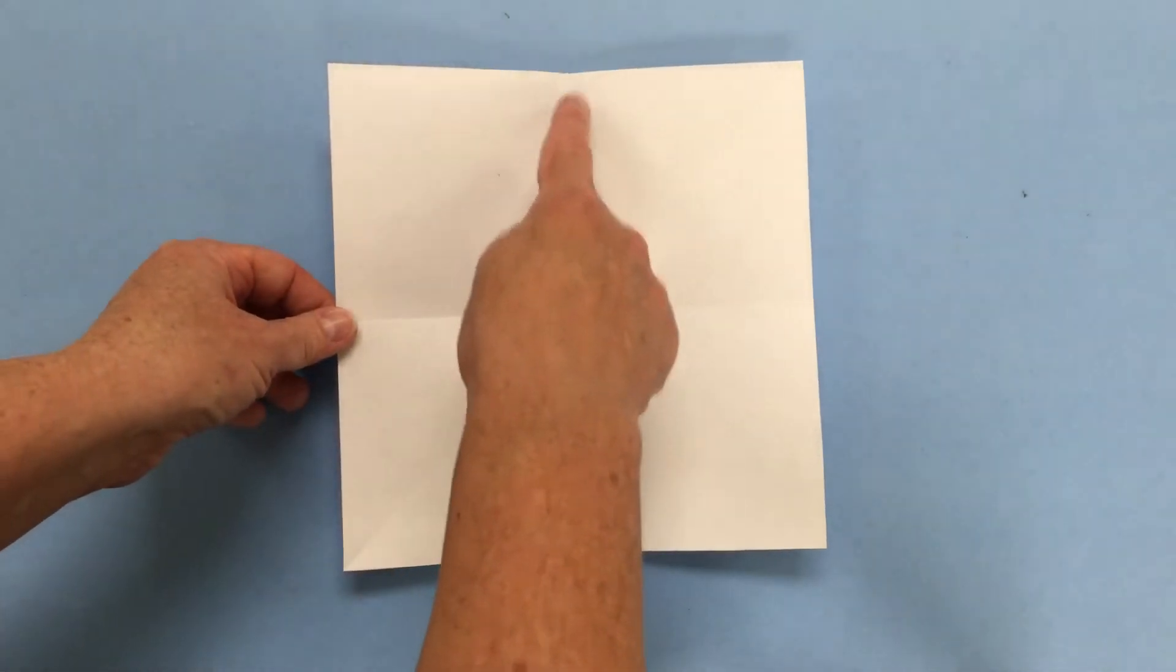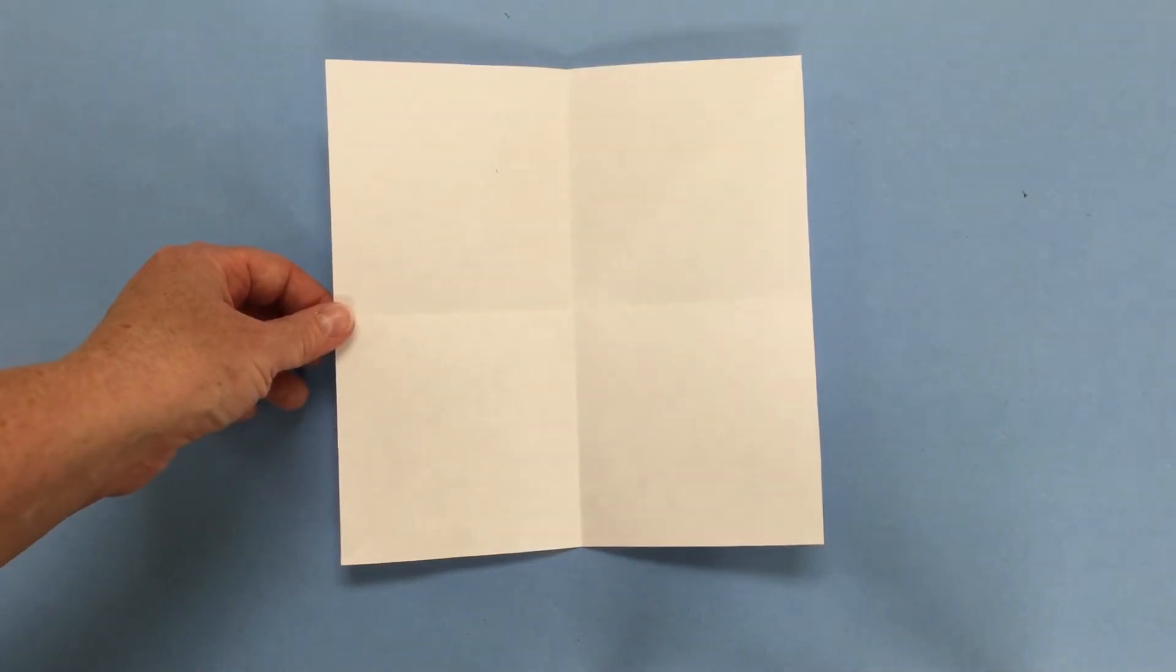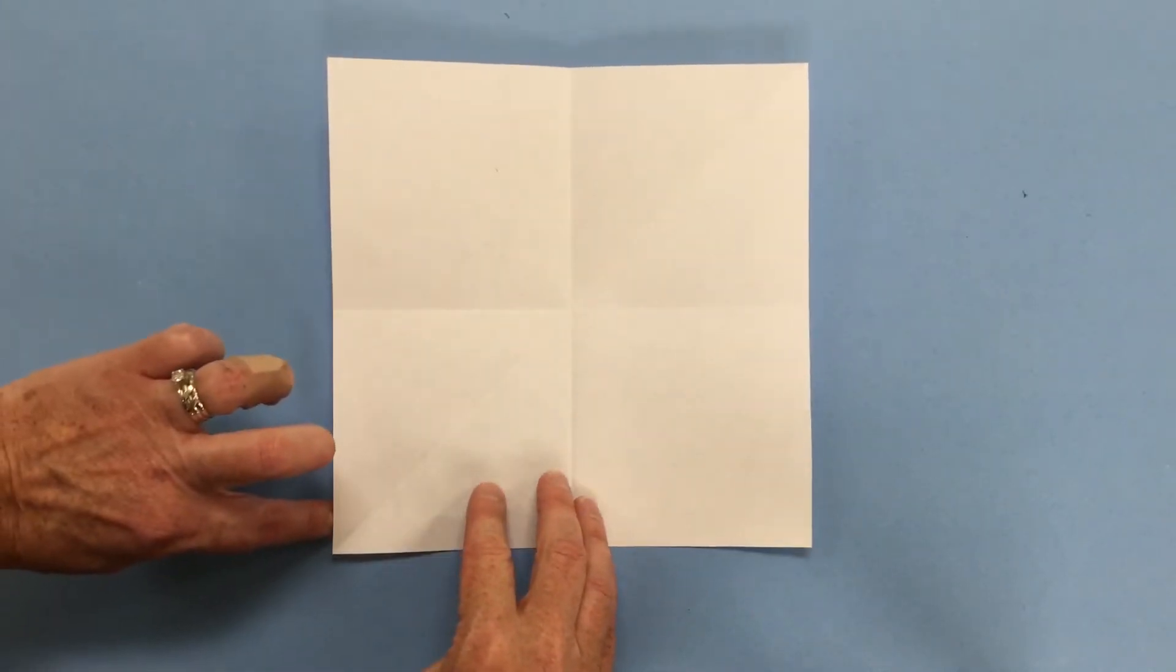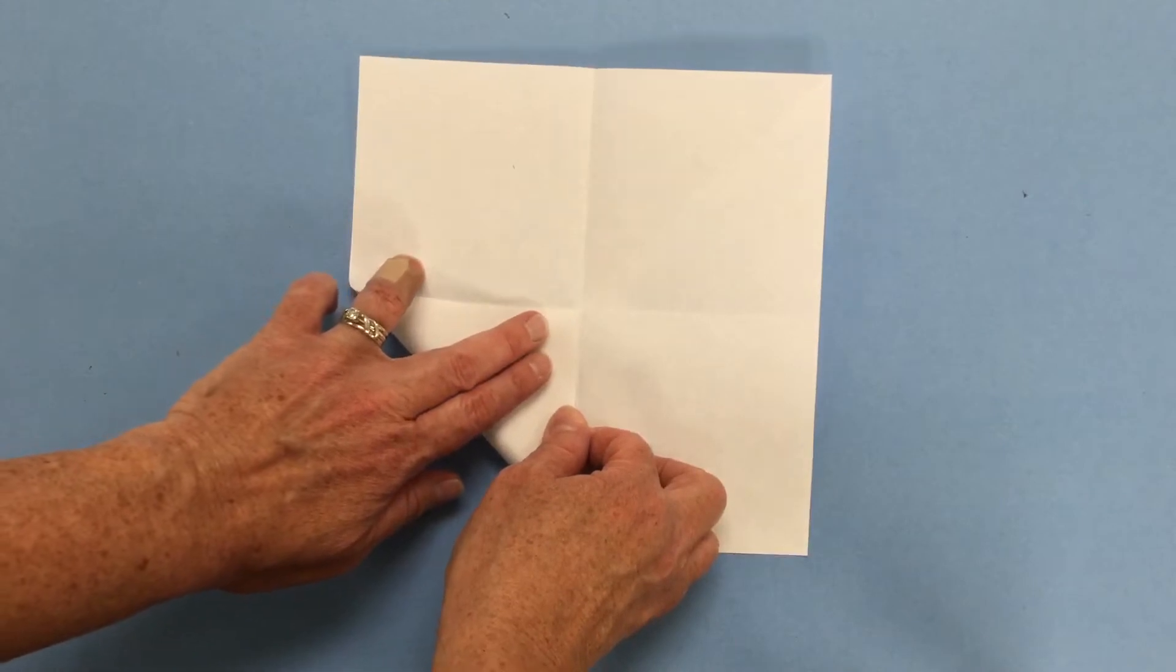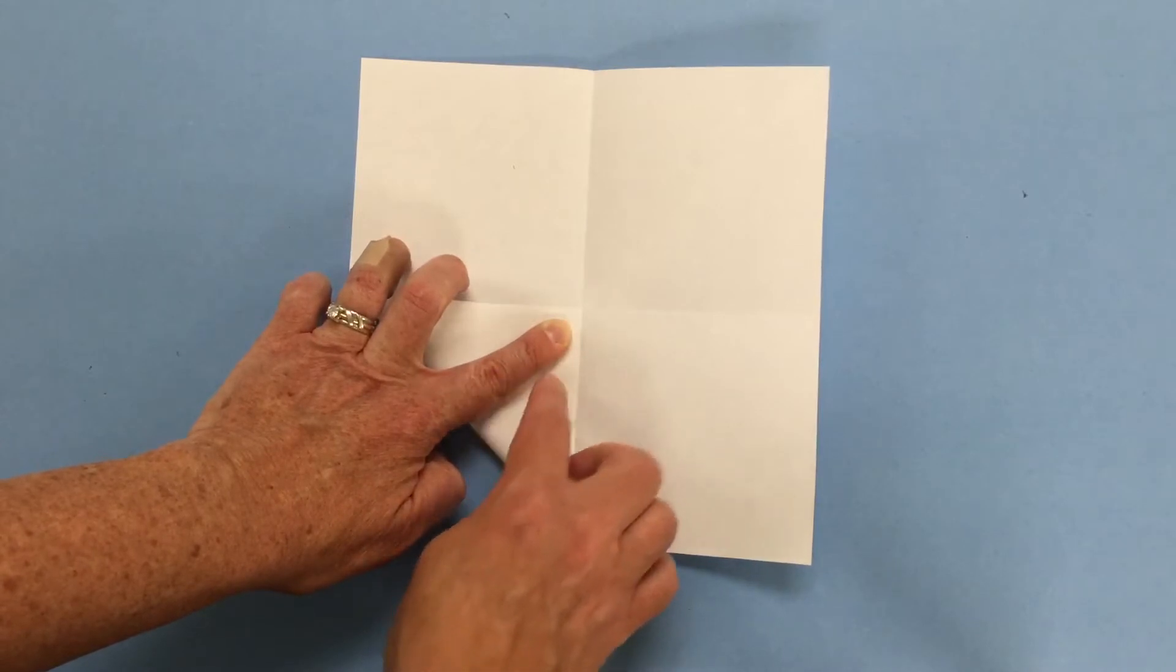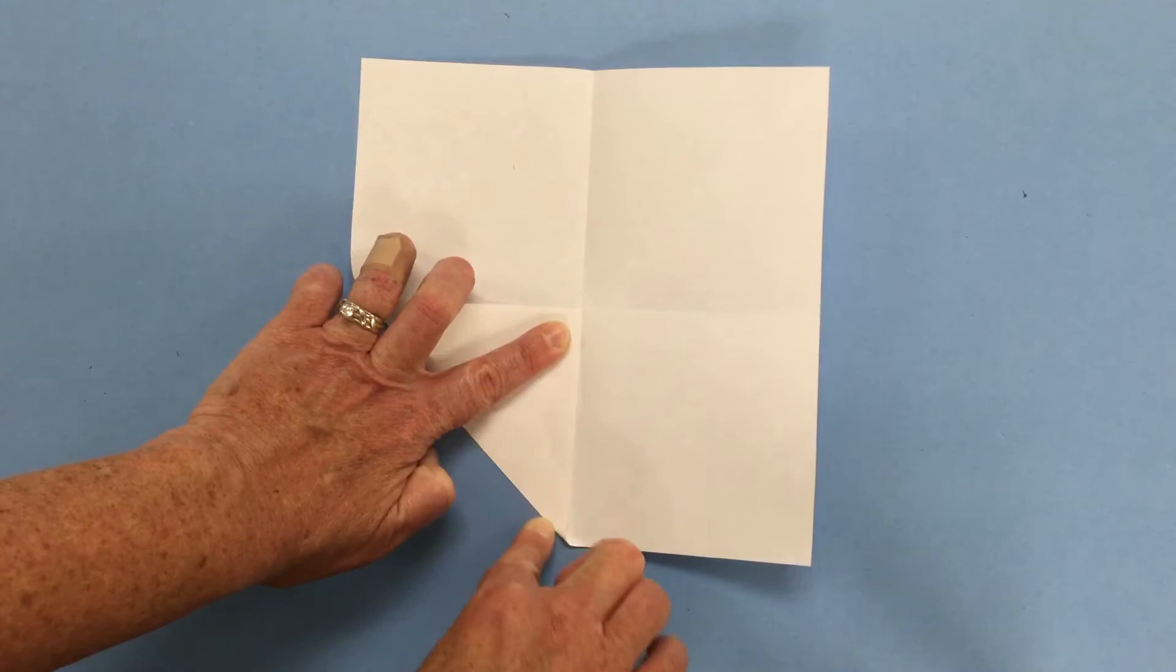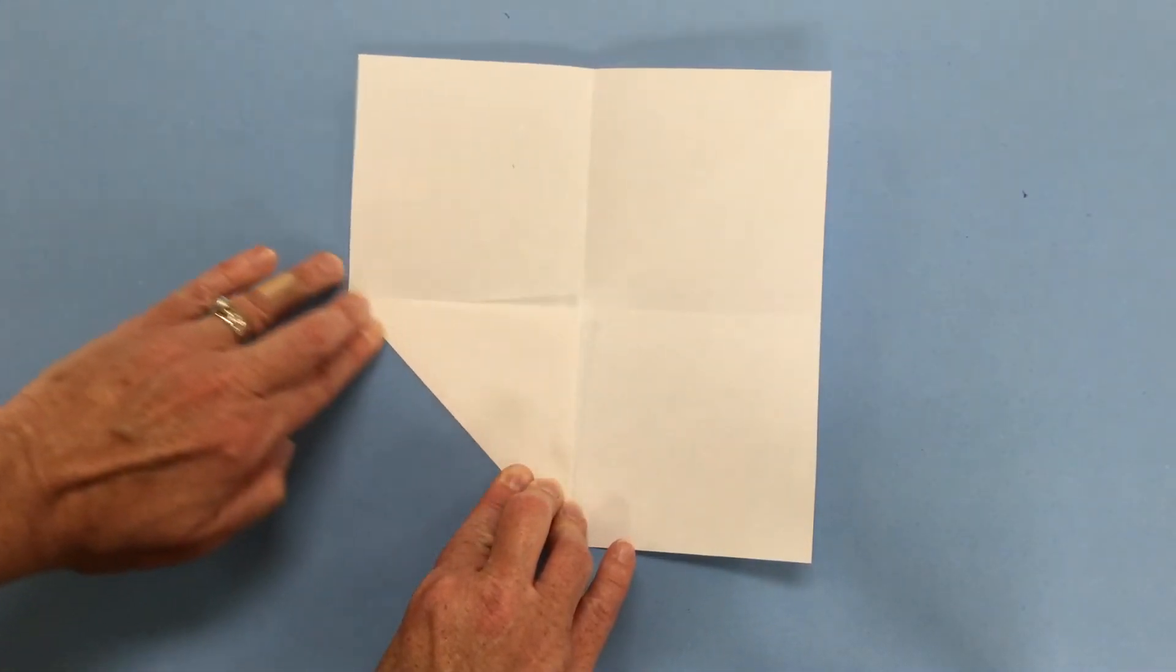You should be able to see four squares created by those two folds that we just made. Now we're going to fold from the corner to the middle. So we're going to use those fold lines that we made to line up neatly with this corner. We're putting this corner into the corner fold that's in the middle and again we want to get a nice firm crease on our paper.